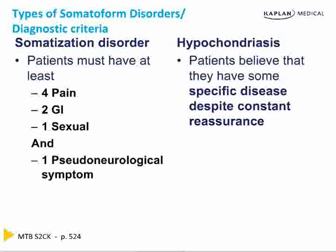Hypochondriasis — these patients tend to believe that they have some specific disease despite constant reassurance. If you've been in the hospital wards, you know these are the patients who come in and swear that they either have an infection or some type of neoplasm. They don't say this is all the stuff that's wrong with me; they say, 'Doctor, I think I have an infection. I swear I have some kind of cancer.' For somatization, they don't know what's wrong with them — they just know that a lot of things are wrong, and you have to count and decide whether it's somatization or hypochondriasis.